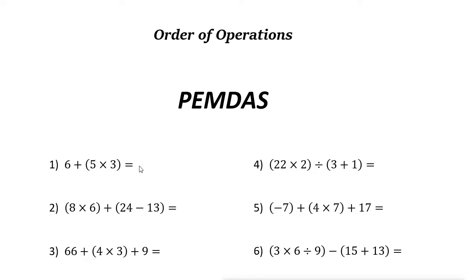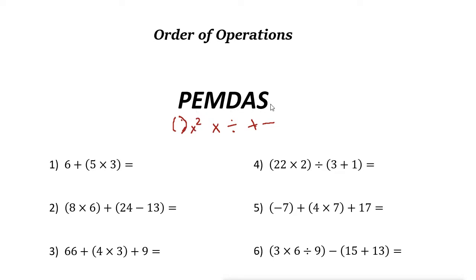To solve order of operations problems, we need to remember PEMDAS. The first letter P is for parentheses — parentheses is the first operation we solve. Then E for exponents, which are numbers to the power of something, for example the power of two. Then M and D for multiplication and division, and finally A and S for addition and subtraction. So from left to right: parentheses, exponents, multiplication, division, addition, subtraction — PEMDAS.